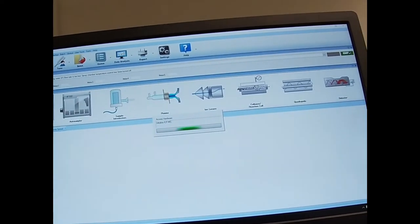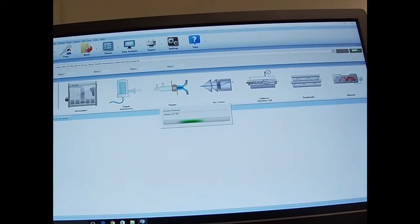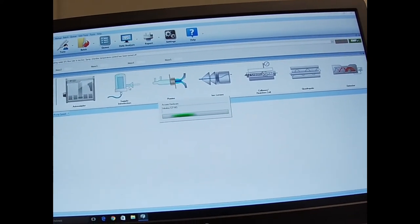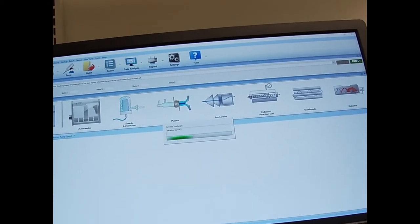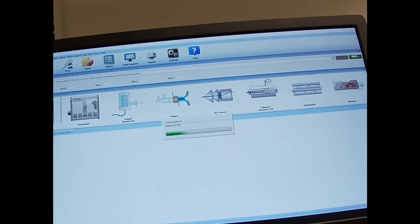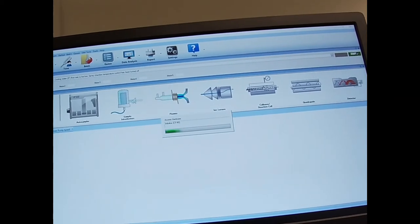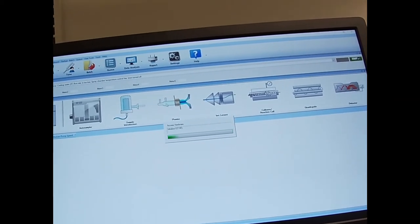So we're initializing and you can see here we have our mainframe. This is the auto sampler. This is essentially representing our nebulizer. So we have our sample come in, it gets vaporized. Large droplets drain and of course the smallest ones actually enter the torch.